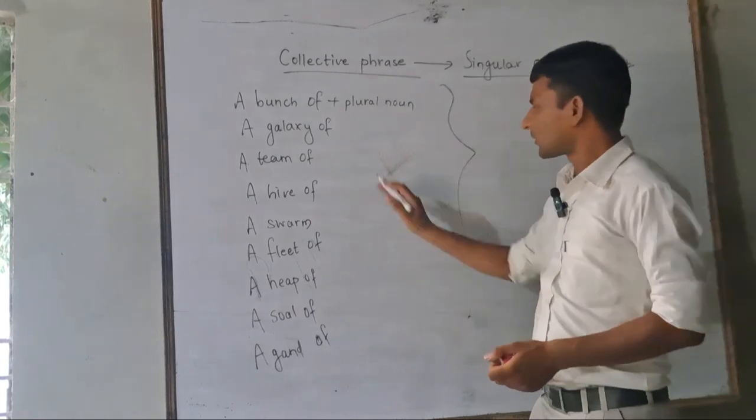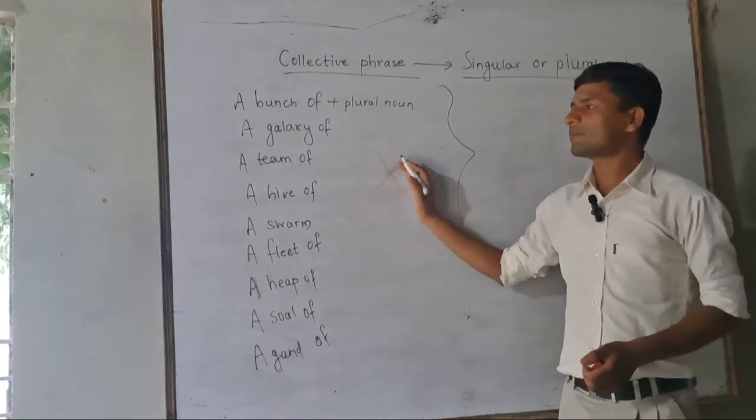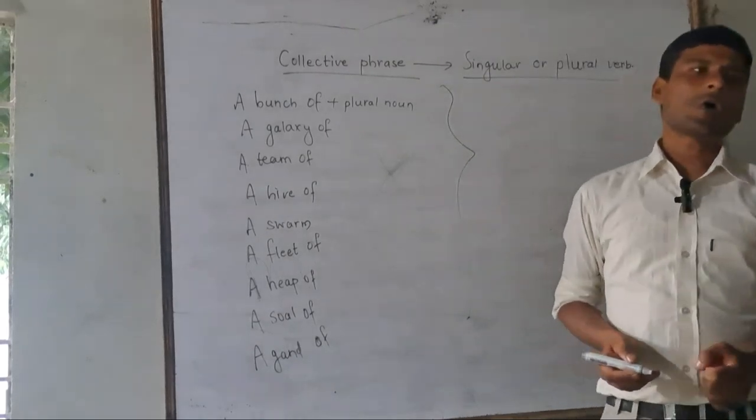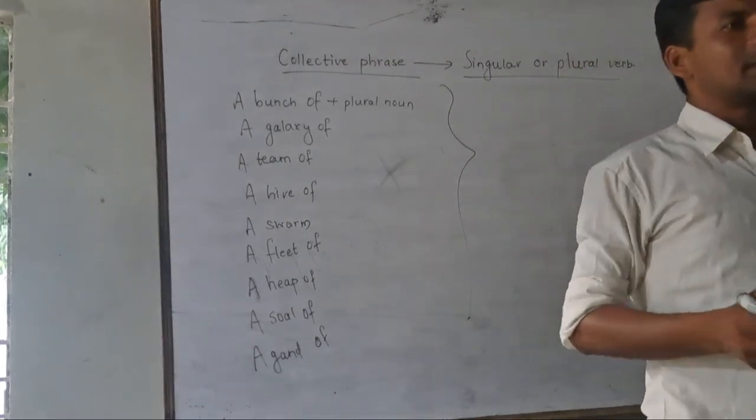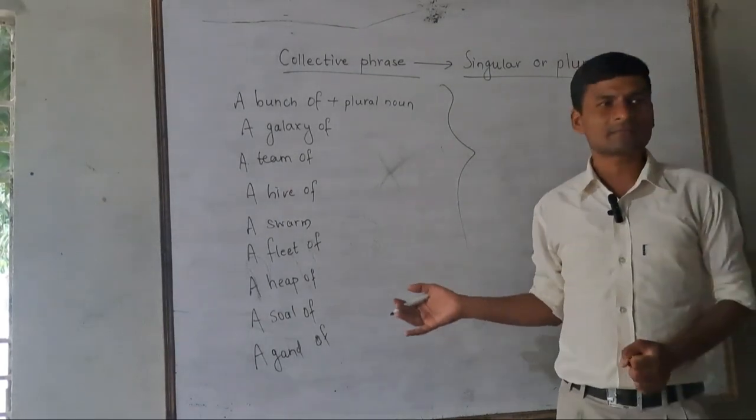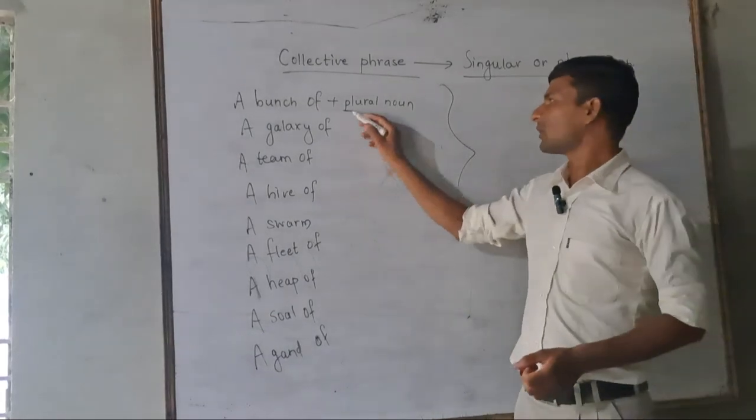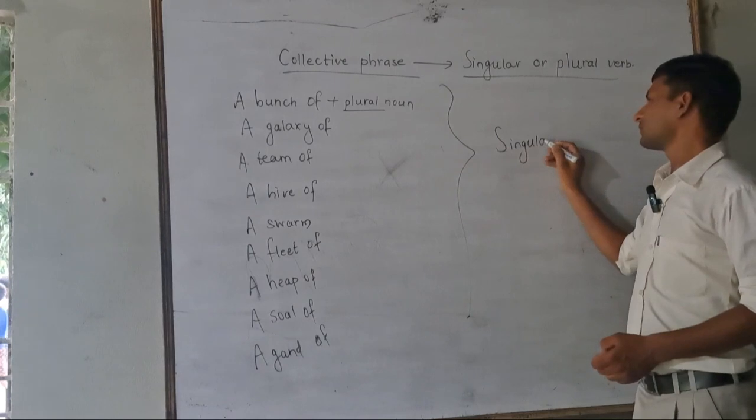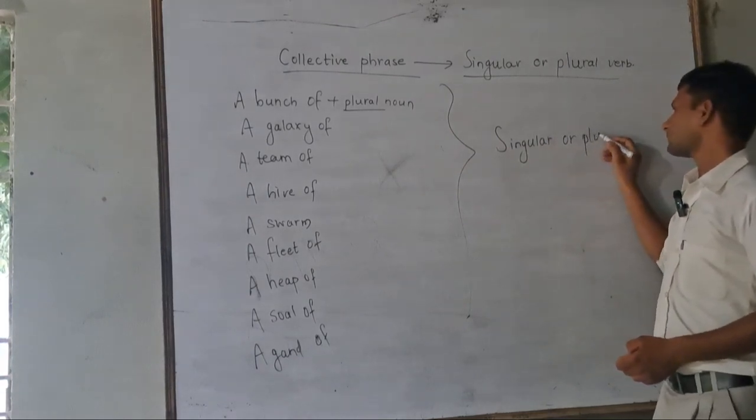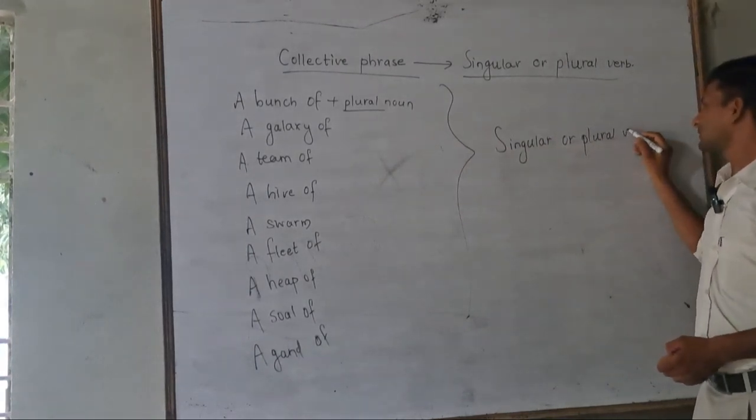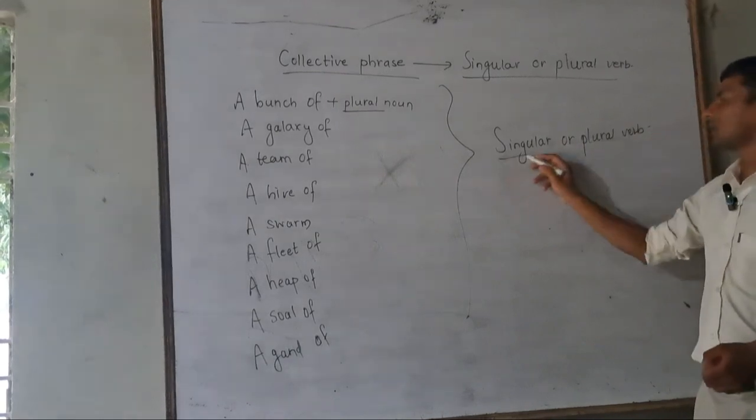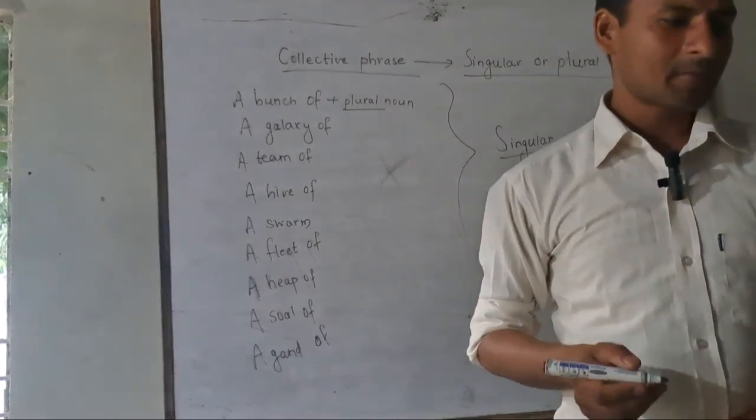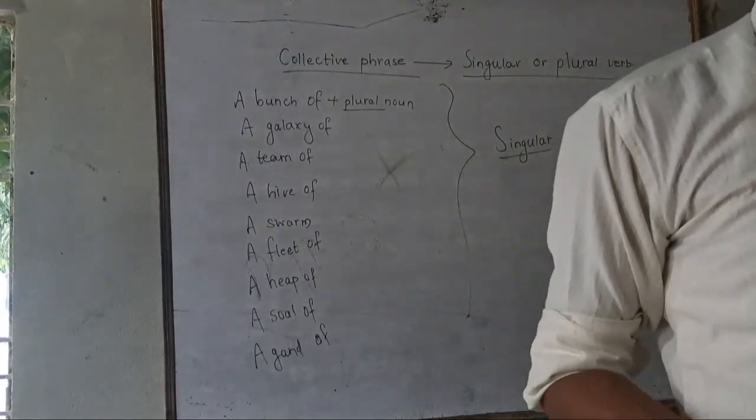All plus plural noun. A bunch of galaxies, a team of, a galaxy of baby, a lock of hair. Bunch of keys, bunch of grapes also. All take plural noun but singular and plural verb. Both is correct.